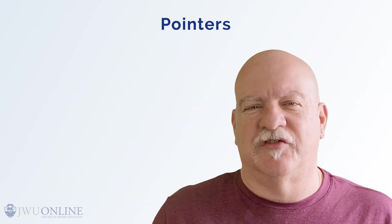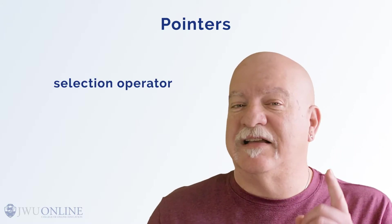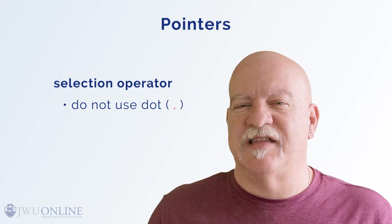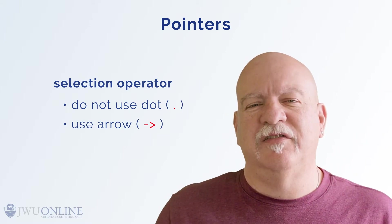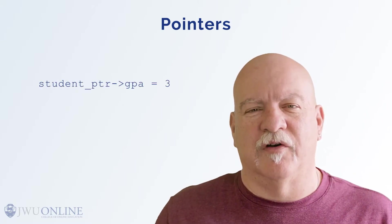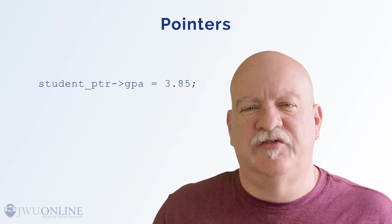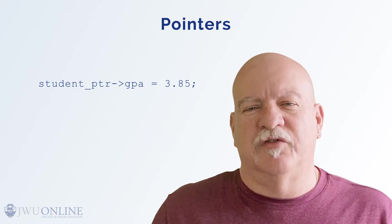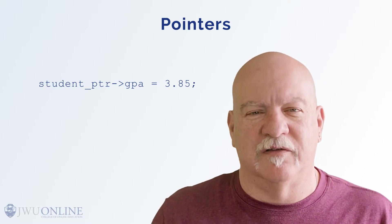Next, we can use this structure that is out on the heap using the selection operator as we did before, except that we do not use the dot as the selection operator. Instead, we use the arrow because the structure is being pointed to. So in this case, to assign the GPA, we would say: student_pointer->GPA = 3.85; This would go to the structure on the heap and place the 3.85 in the appropriate field.